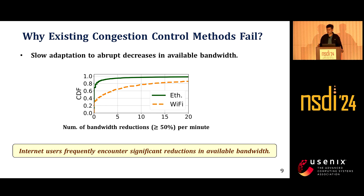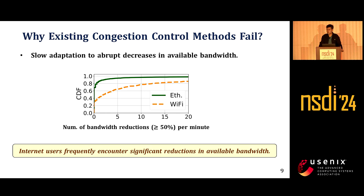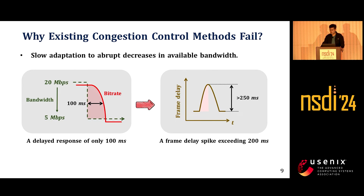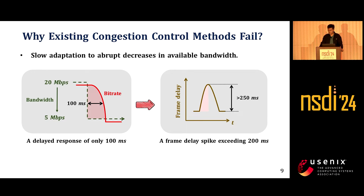The second reason is that some methods suffer from slow adaptation to network changes. In real networks, there are often instances of abrupt bandwidth decreases. Even for Ethernet, users experience frequent and dramatic reductions in end-to-end bandwidth, attributable to factors such as contention from newcomers or channel degradation. When bandwidth degrades, a belated bitrate reduction results in severe queuing. For example, if available bandwidth reduces by four times, a delayed response of only 100 milliseconds would lead to a tail frame delay exceeding 250 milliseconds. Conversely, a timely response would significantly reduce tail delay and the stall ratio.